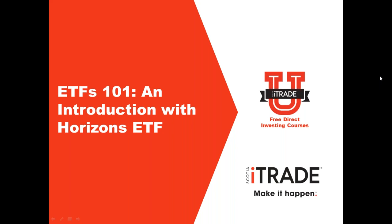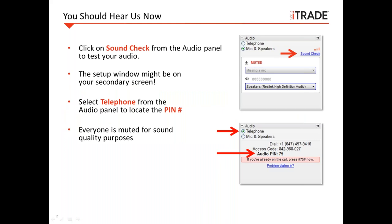Before we get started, let's take care of some housekeeping items. Your sound quality should be good, but if you want to check it, click on the sound check link in the audio panel of your GoToWebinar toolbar. This setup window may be on your secondary screen if you're using two monitors. Everyone will be muted for sound quality purposes today. If you're experiencing sound quality issues, you may switch to the telephone using the conference number on the toolbar — just remember to use the access code and your audio PIN ID.